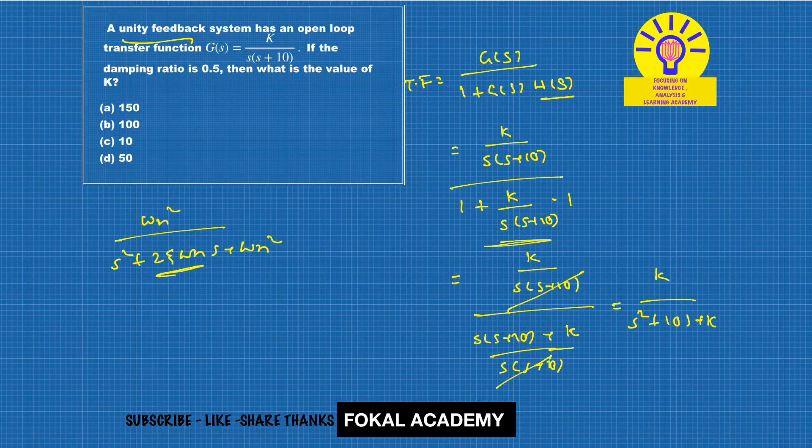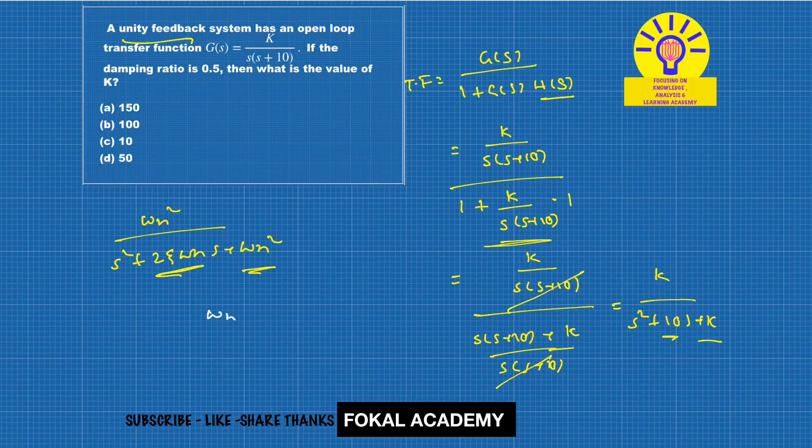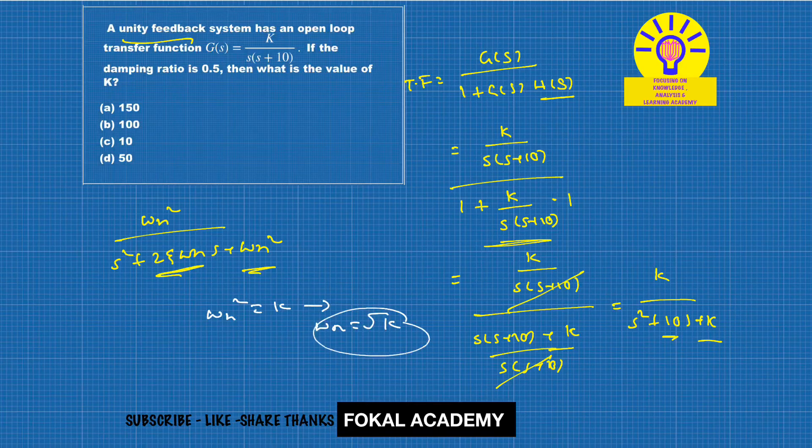Now from this, ωn² is equal to k means ωn is equal to √k.